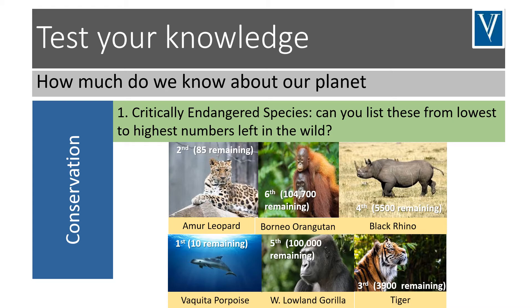Have a look at the answers and see how you did. Coming in first with fewest numbers remaining in the world is the Vaquita porpoise, just 10 remaining. Second is the Amur leopard with 85 remaining. Third, the tiger with 3,900. And fourth is the black rhino, 5,500 remaining. Fifth, we've got the West Lowland gorilla, about 100,000 remaining. And sixth, the Borneo orangutan, where there's 104,700 remaining. Hopefully you got some of those in the right order.